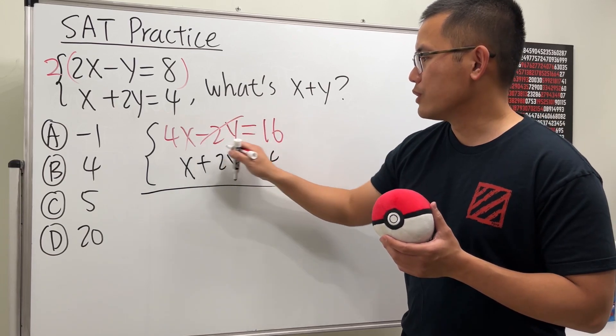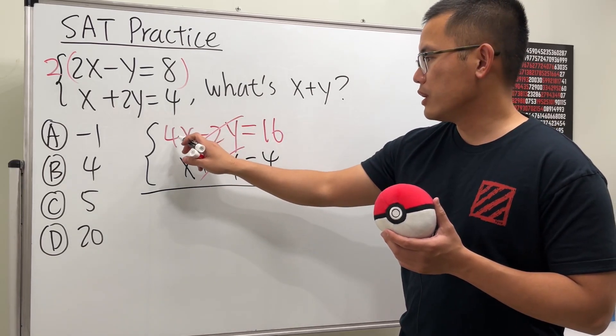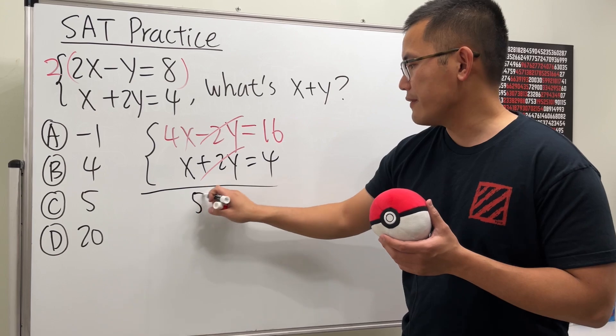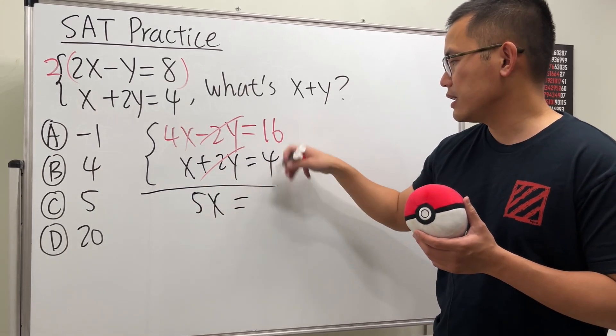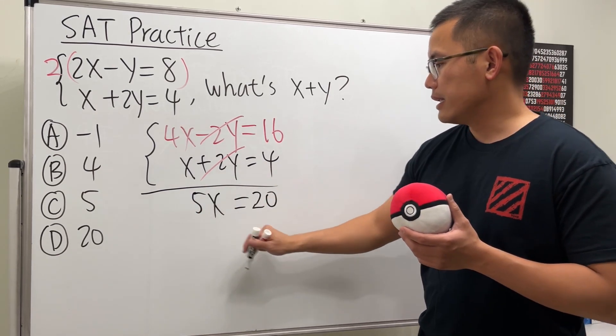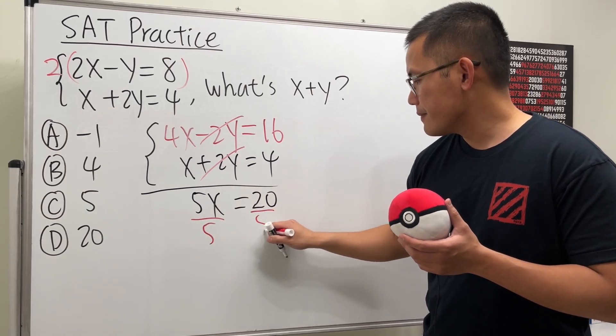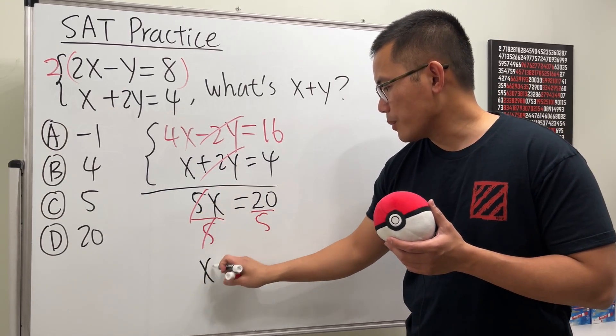them. You see, this plus that, they will just cancel to be zero. And then we'll just get 4x plus x which is 5x, and that's equal to 16 plus 4 which is 20. And then divide both sides by 5, and we see x will be equal to 4.